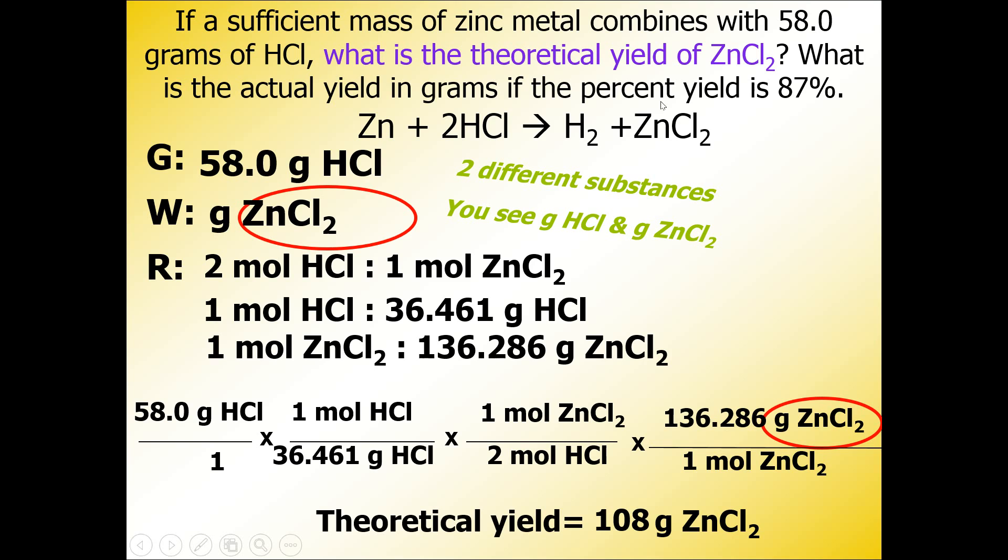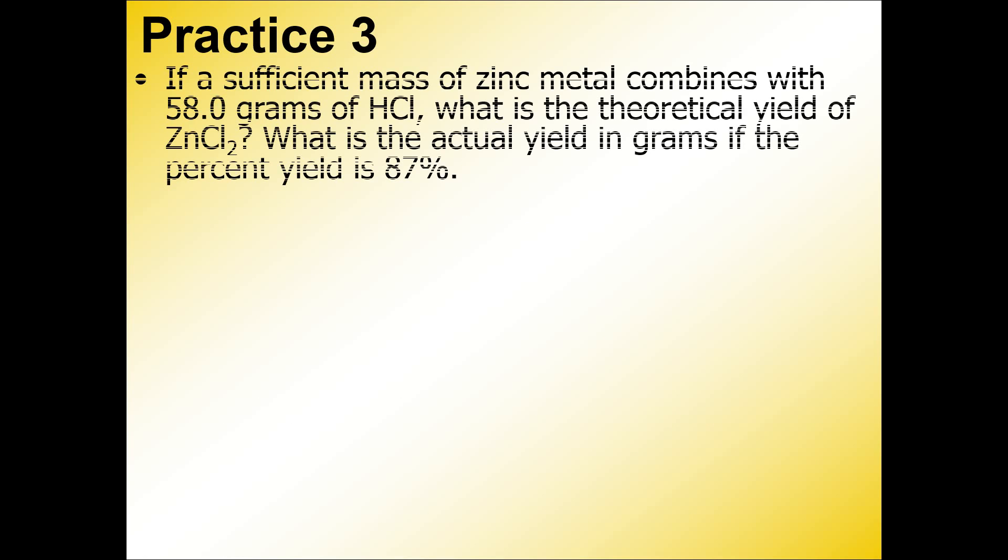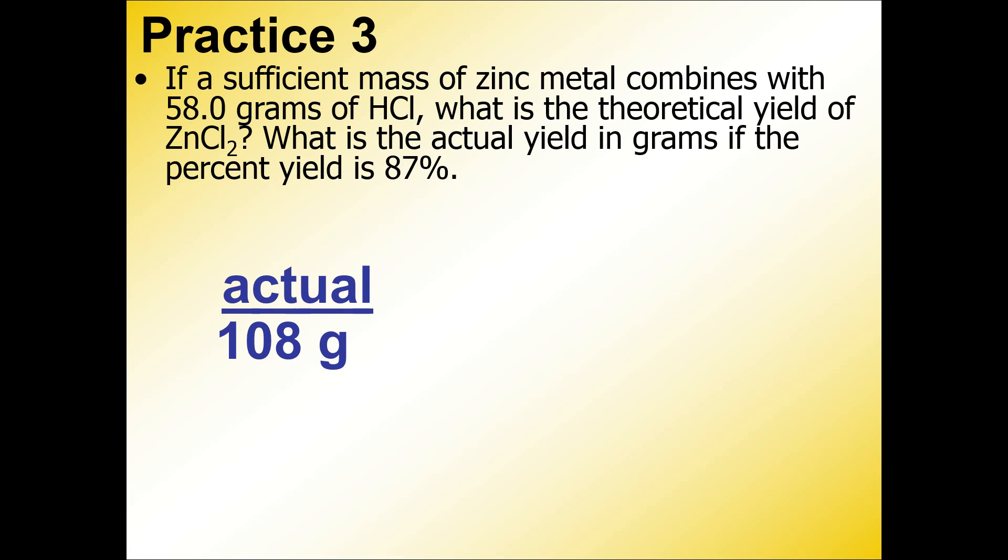Now zinc chloride is a product, so this is a proper theoretical yield. It's for a product. Yield means product. As we continue on with the problem, we can plug in any numbers that we have from our percent yield question.